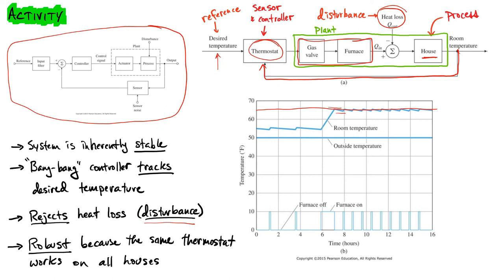The question about robustness is whether it works even if there are model uncertainties. This very simple controller uses a very primitive model — essentially that heat goes in and then we lose some heat because of disturbances. We don't even model the house. Some more modern thermostats could build a data-driven model about insulation and sunlight reflection. But by and large, these simple on-off controllers are robust because we install that same thermostat with no calibration in many different houses and apartments.